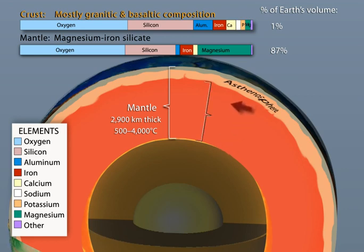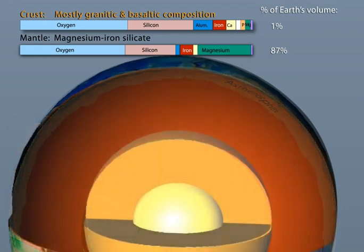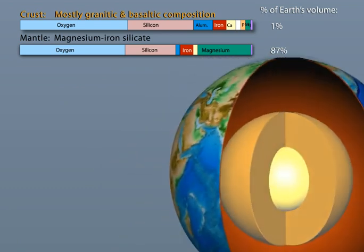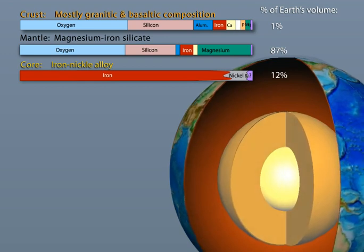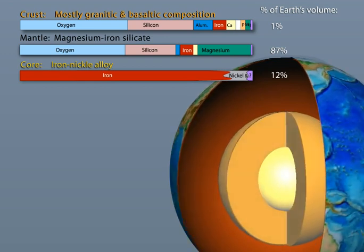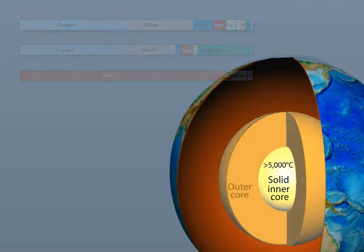The lower mantle comprises 55% of the planet by volume and is denser and hotter than the upper mantle. At the center of the Earth is the core, which is nearly twice as dense as the mantle because it's a metallic iron alloy rather than rock. Unlike the egg yolk analogy, Earth's core is made up of two distinct parts: the liquid outer core and a solid inner core. Although the inner core is hotter than the outer core, there is also greater pressure squeezing the atoms, changing the material from liquid to solid.